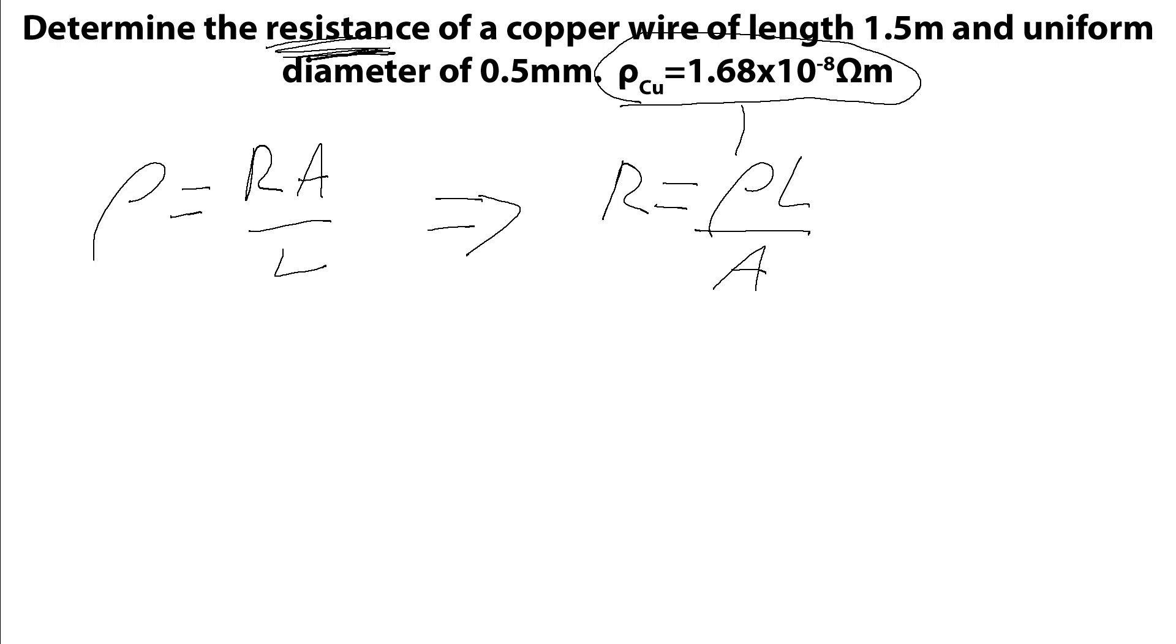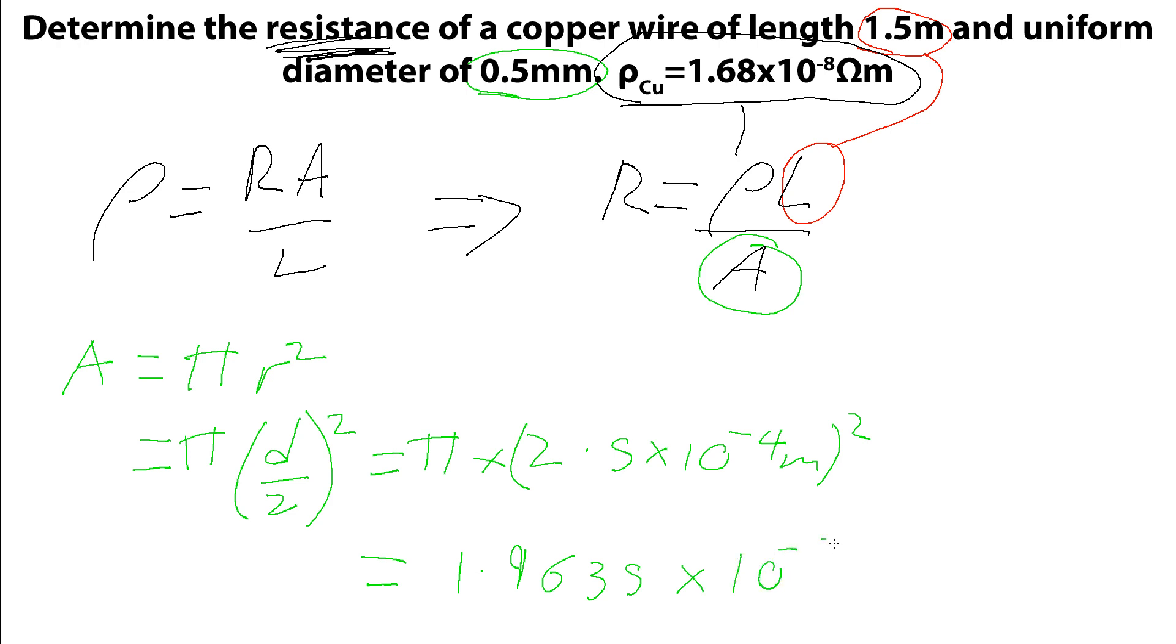The length of the sample, we're also given in the question. So this 1.5 meters, we just stick in here. And so all that we've got left to do is work out the cross sectional area, having been given the diameter. So we know if it's a diameter, we're going to take it as a circle. So the area is pi R squared. We're given the diameter, so we need to change that to pi into the diameter divided by 2 squared. And this gives us pi times 2.5 times 10 to the minus 4 meters. So being careful with the units, this is in millimeters. We square that. And that gives us a value of the area of 1.9635 times 10 to the minus 7 meters squared.